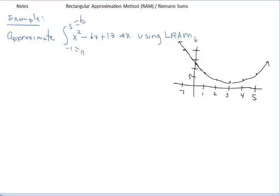I'm going to draw vertical lines at the A and B values. From negative 1 up to the functional value, and from 5 up to its functional value. We're looking at the space between the quadratic and the x-axis from negative 1 to 5. We don't have a geometric formula to find that area — it's not a known geometric shape. So the best we can do right now is approximate this region. We approximate it by using rectangles, because rectangles are easy to calculate area for.